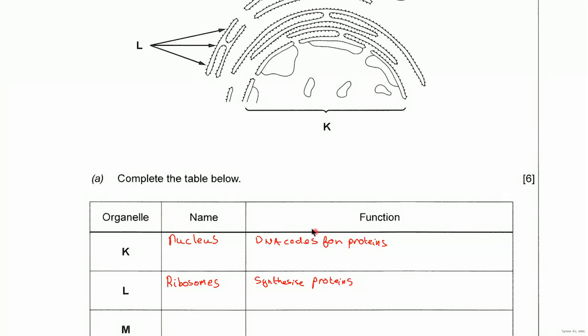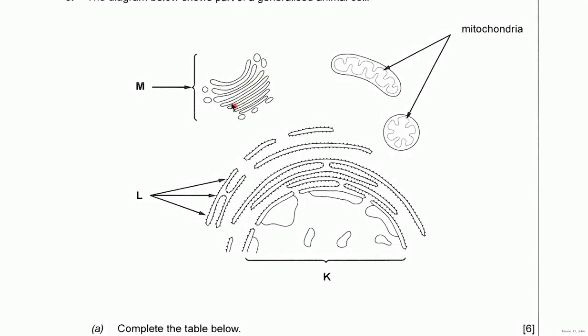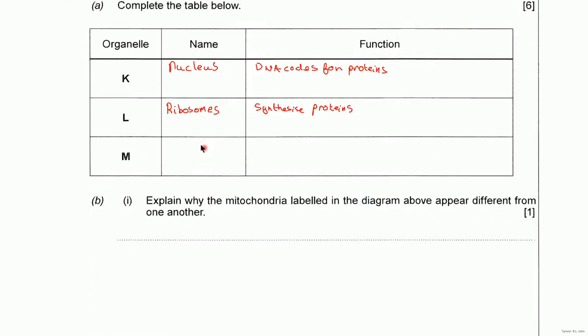Okay, and M then, here, that is the Golgi body. Okay, you can see it's got flattened sacs, known as cisternae, and they don't, they're not interconnected, they're separate cavities. So, that's the Golgi body. Always put Golgi body, don't just say Golgi. You'll not get a mark for that. You could call it the Golgi apparatus. Okay, that would also be acceptable.